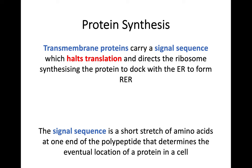Transmembrane proteins carry a signal sequence, and that signal sequence is going to halt translation when those proteins are being synthesized at the ribosome. If the signal sequence halts translation, that then directs the ribosome — which is making that protein — to go across and dock with the endoplasmic reticulum to form the rough endoplasmic reticulum. So all proteins begin in cytosolic ribosomes, but if you have a signal sequence halting translation, that ribosome then moves across and docks with the ER to become an RER. That signal sequence is a short stretch of amino acids at the end of the polypeptide, and it's also going to determine the eventual location of the protein within the cell.